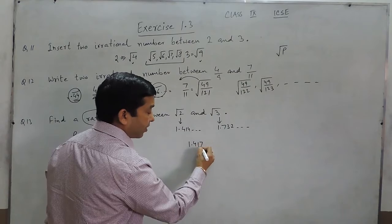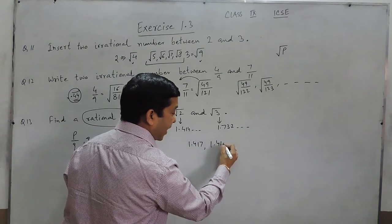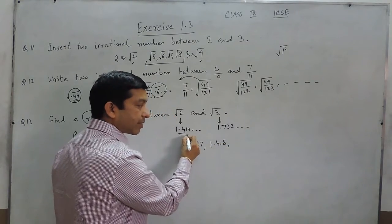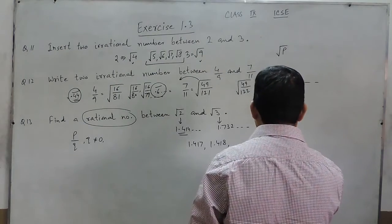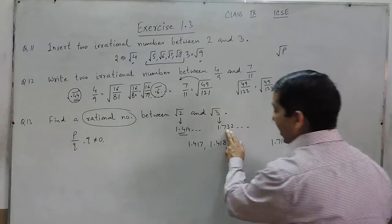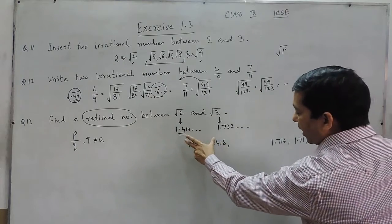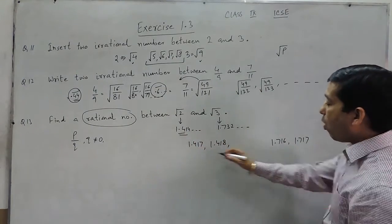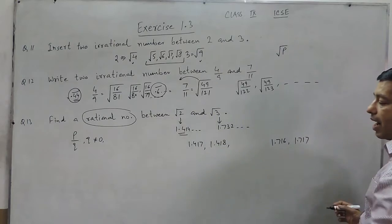so 1.417, 1.418 which is greater than this, or 1.716, 1.717 which is less than this, are definitely numbers between the two. And all these numbers are known as rational numbers.